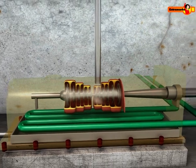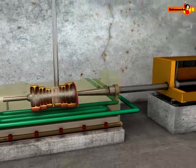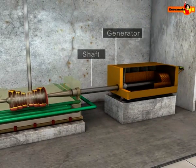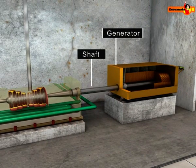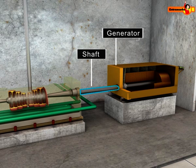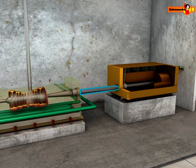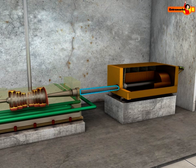A shaft connects the steam turbine to the generator. This shaft transfers the turbine motion to the generator. The generator uses an electromagnet to convert this mechanical energy into electrical energy.